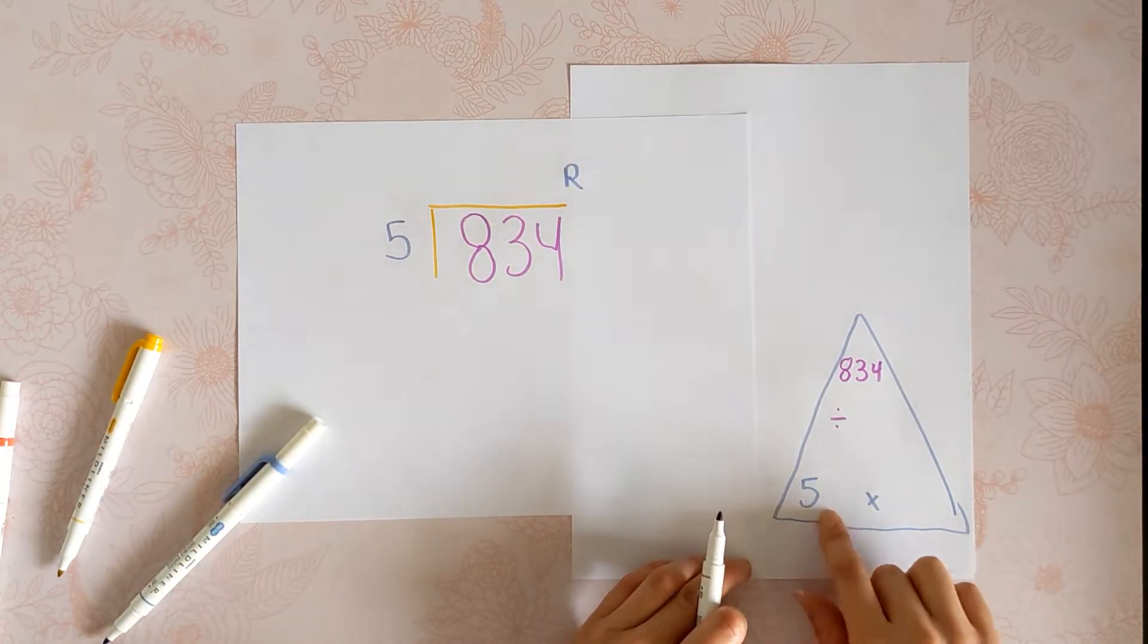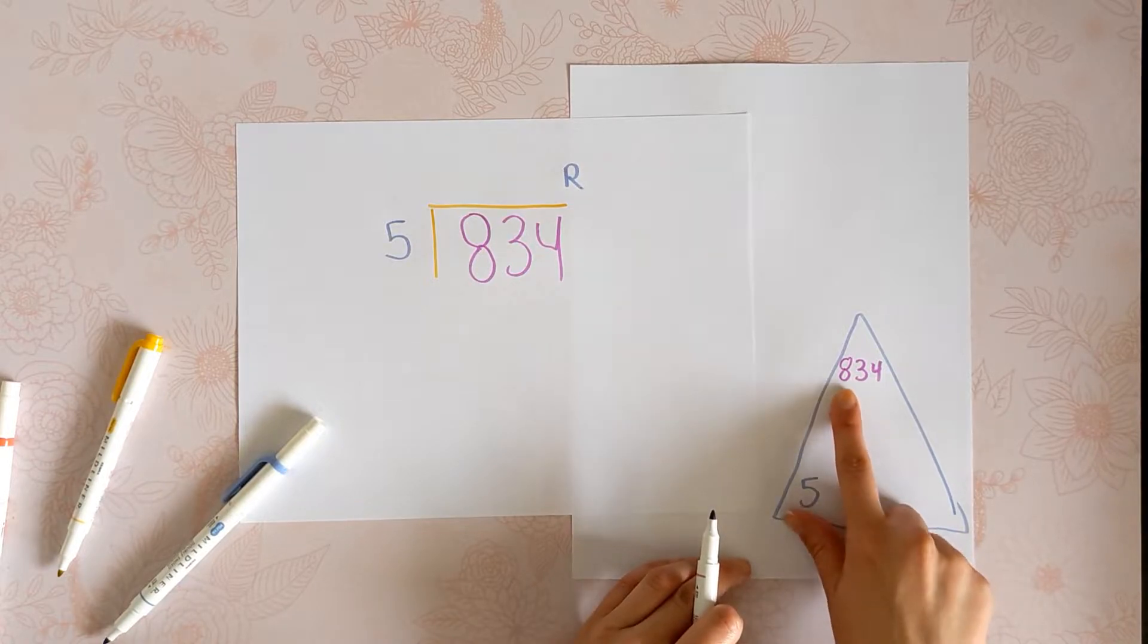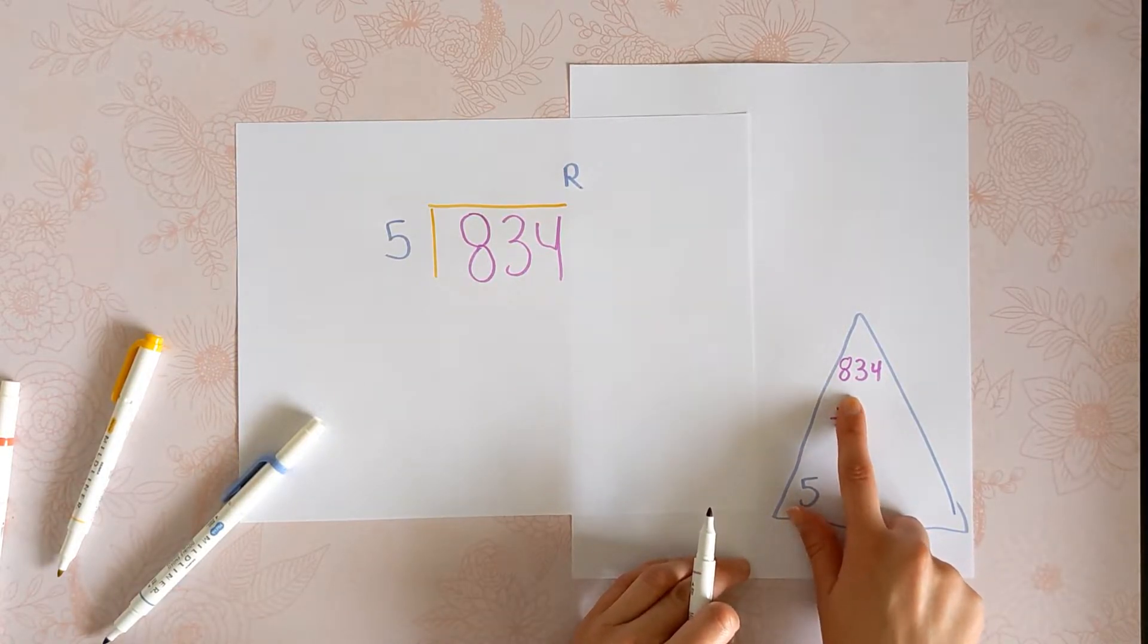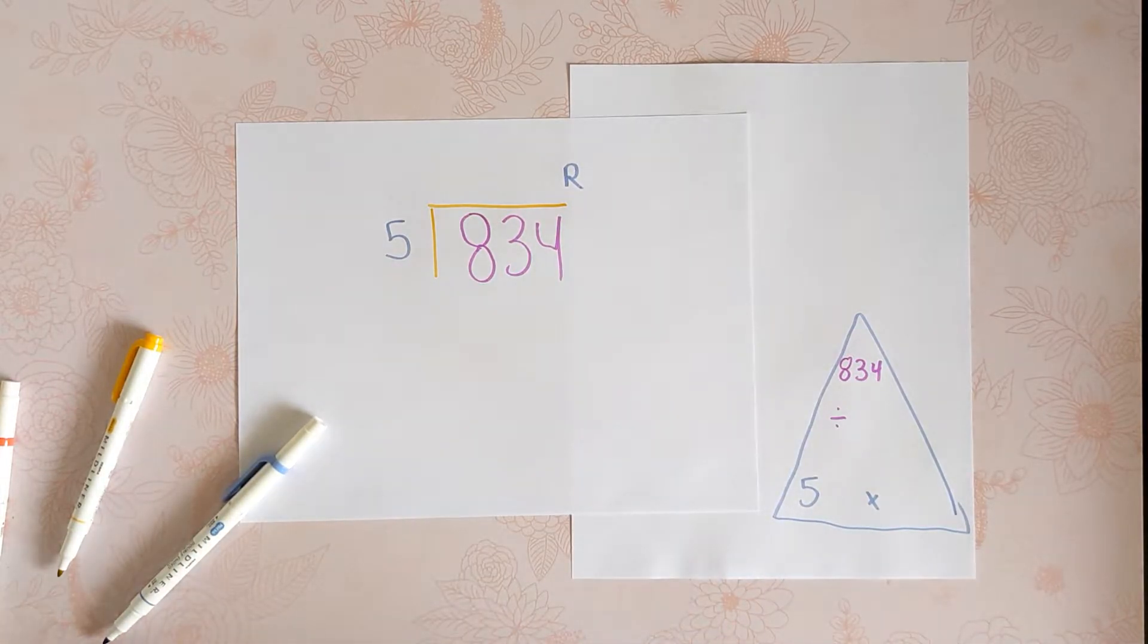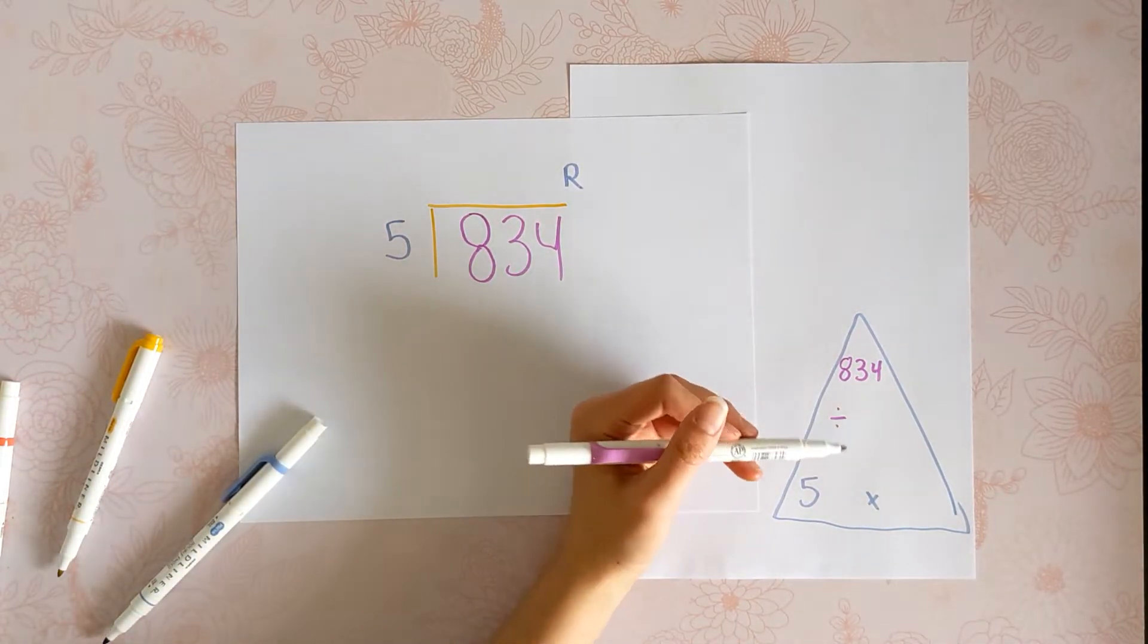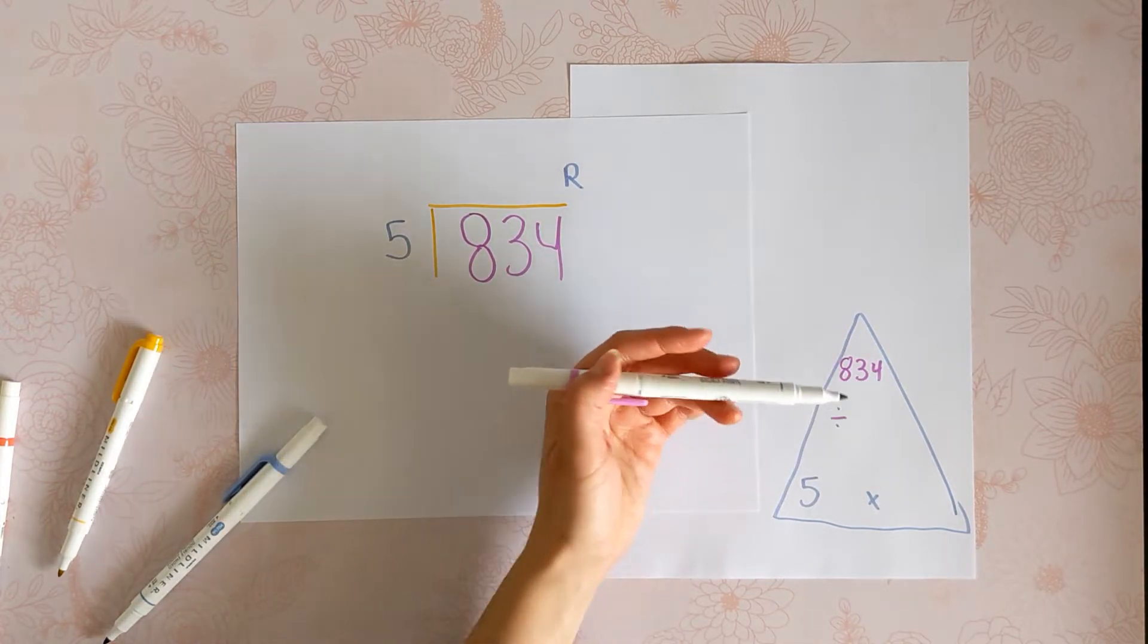We know that all the multiples of 5 end in 0 or 5: 5, 10, 15, 20, 25, 30. So you could do 5 times something to get 830 or 835 or 840, 845, 850, but not 834. So we already know that we are going to have something left over here.